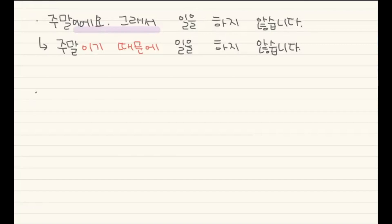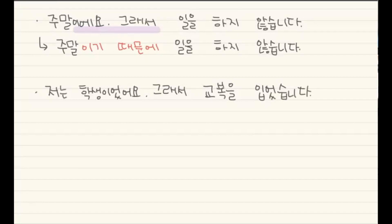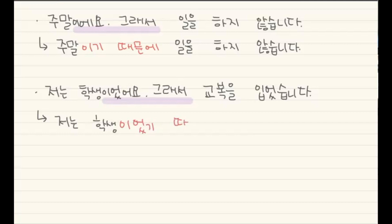Another example using past tense: 저는 학생이었어요. 그래서 교복을 입었습니다 — 'I was a student, so I wore a school uniform.' Here 교복 means school uniform. The part 학생이었어요, 그래서 can be changed to 이기 때문에: 저는 학생이었기 때문에 교복을 입었습니다 — 'Because I was a student, I wore a school uniform.'